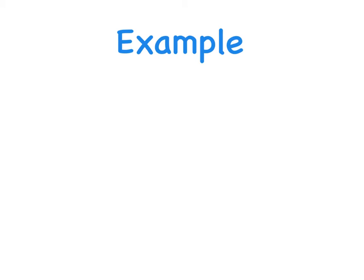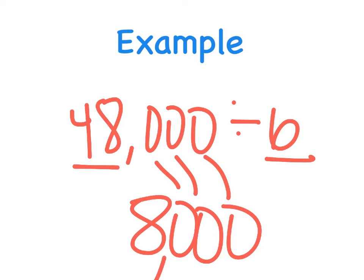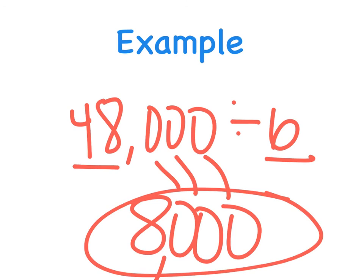We can even use this to work with even bigger numbers such as 48,000 divided by 6. Again, first look at any digits that are not zero. So 48 and 6. 48 divided by 6 is 8. And then I'm going to add on my 1, 2, 3 zeros to get my final answer of 8,000.